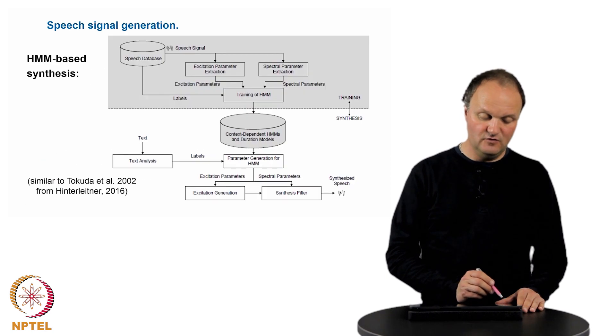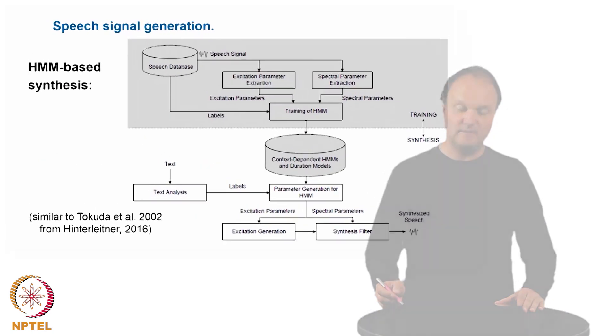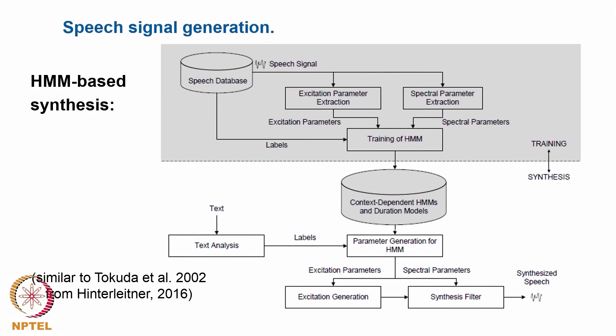In case that you do not have such a large memory available, you can make use of the fourth principle, which is based on hidden Markov models. As we know from automatic speech recognition, hidden Markov models can be used to find a path between states, and this path then can be optimized by calculating the probabilities.